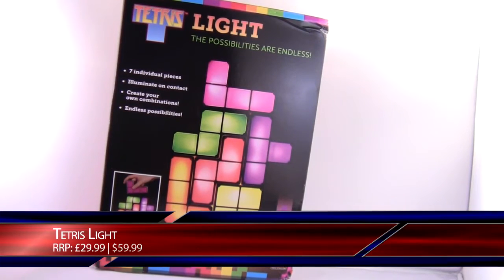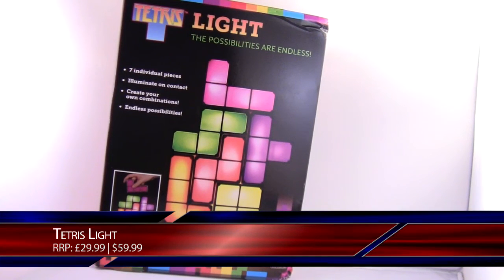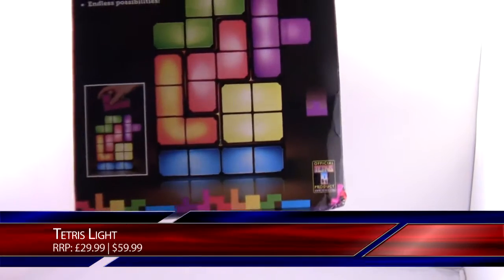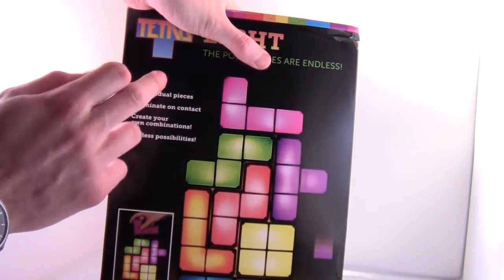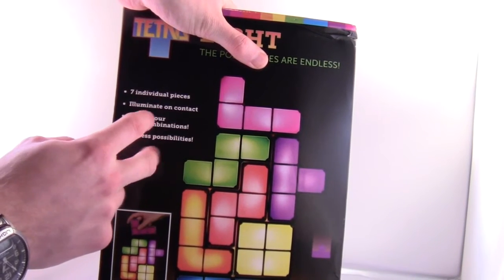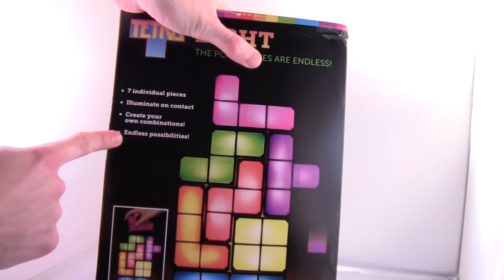Hi guys, in this video I'm going to be doing an unboxing of the Tetris Light. This is an official product, and here's the official stamp. It comes with seven individual pieces, illuminates on contact, and you can create your own combinations. There are also endless possibilities.